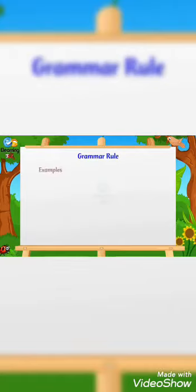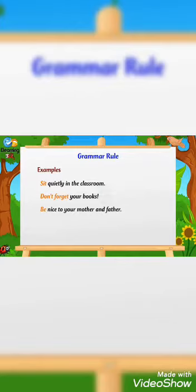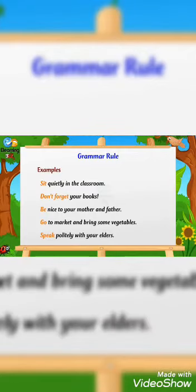Grammar Rule Examples. Sit quietly in the classroom. Don't forget your books. Be nice to your mother and father. Go to market and bring some vegetables. Speak politely with your elders.